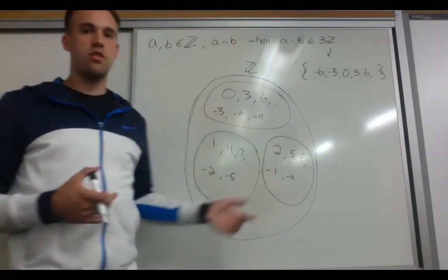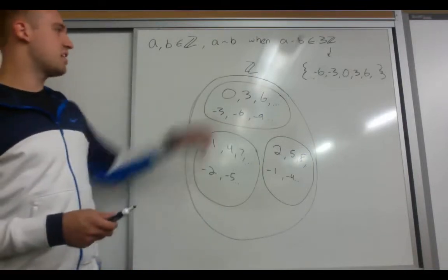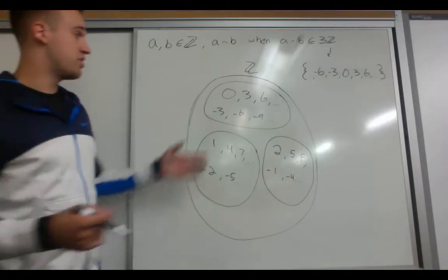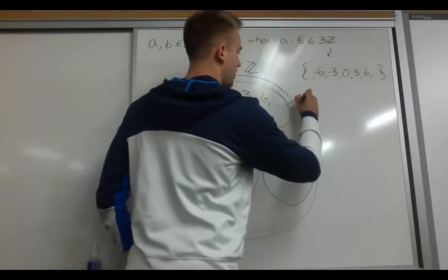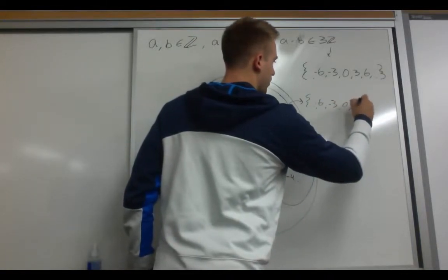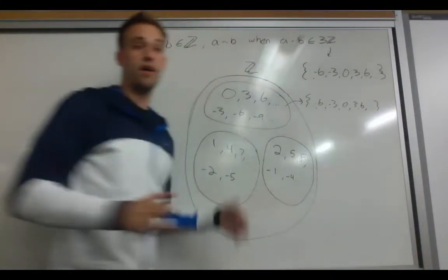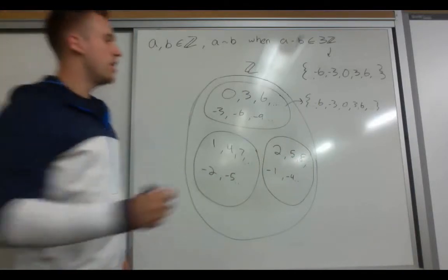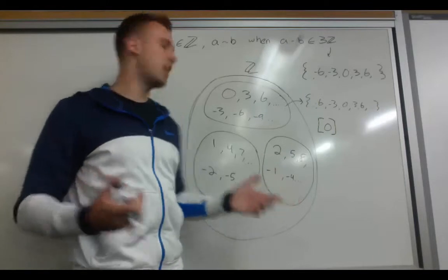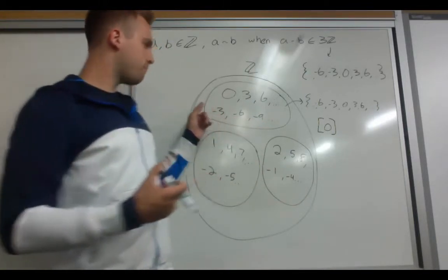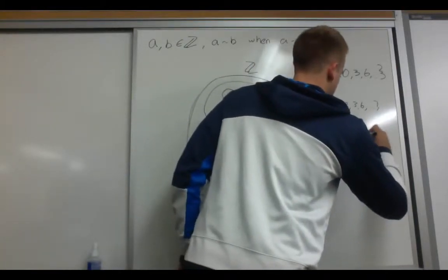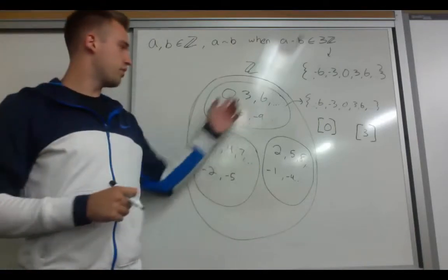Now with our equivalence classes, we've partitioned our set so that all classes are disjoint and together they contain the whole set of integers — every integer is accounted for. To name our equivalence classes, one way is to write out all elements, but that's long and sloppy. An easier way is to call it the equivalence class that contains 0, using bracket notation. This means that knowing 0 is in the class lets us generate all other integers in that class. We could also name it as the equivalence class generated by 3, since these two are actually equal to each other.